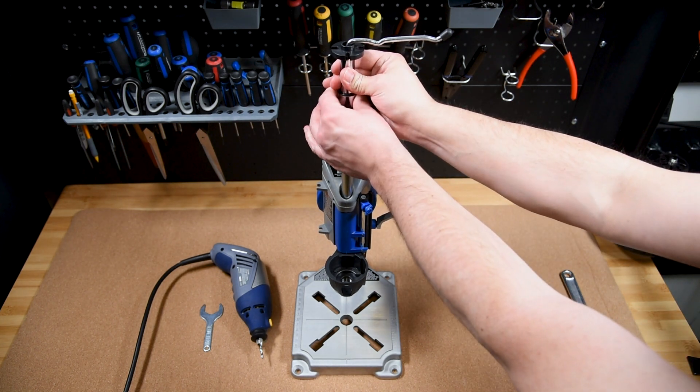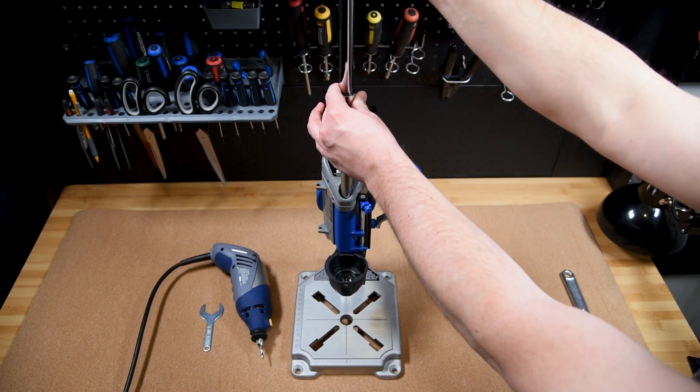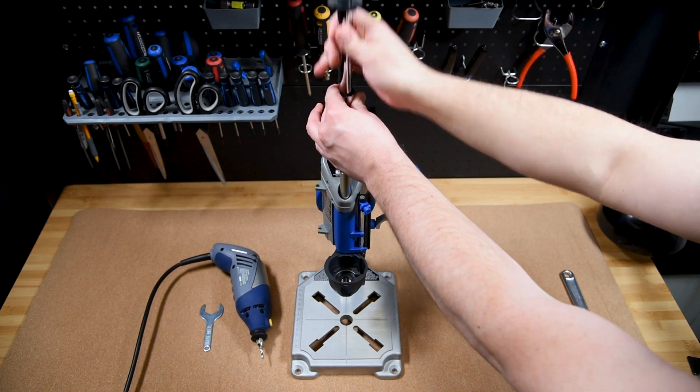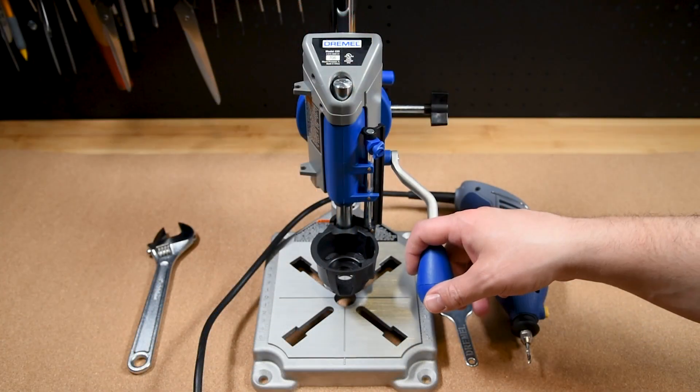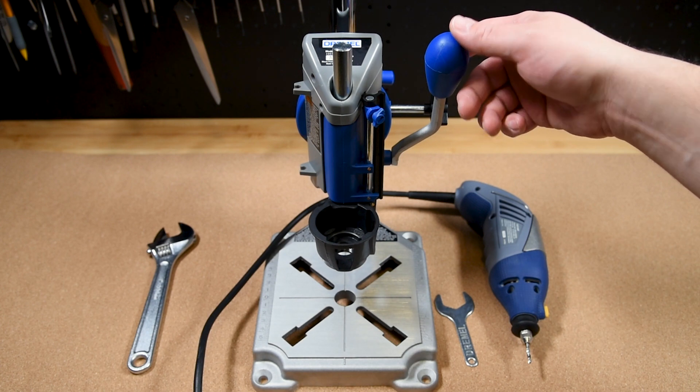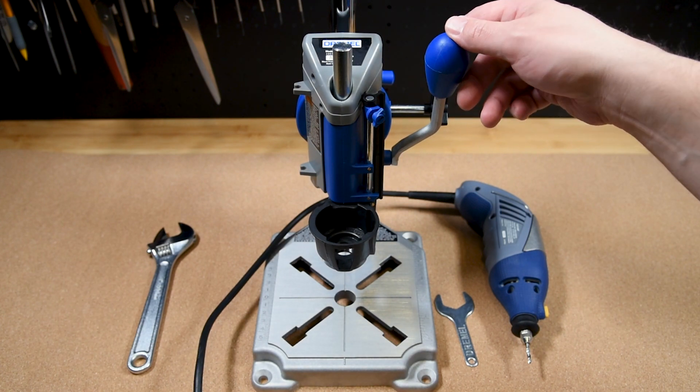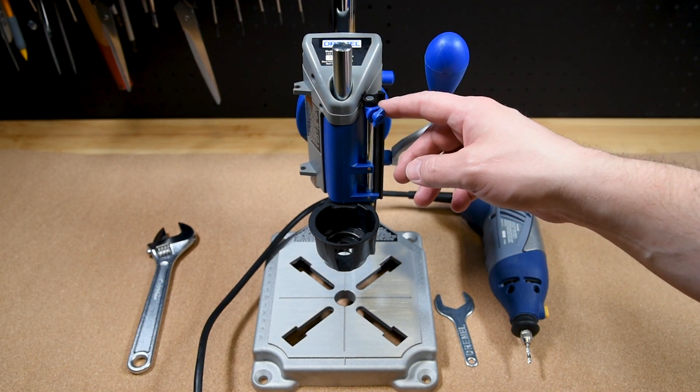It also has a telescoping rod so you can adjust the position of your work tool and flexi rod if you're using it in that mode. You'll also notice here on the right hand side there's a little set stop screw that lets you adjust the depth of the drill press.